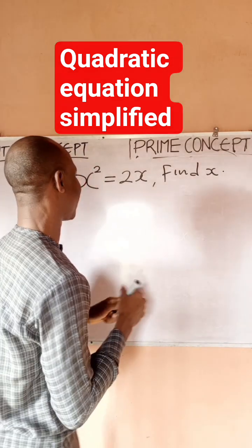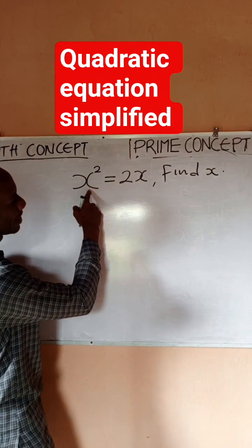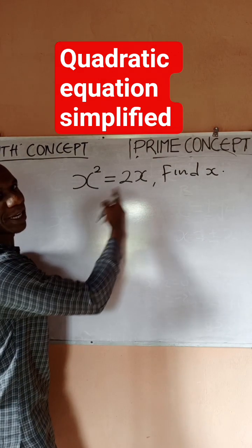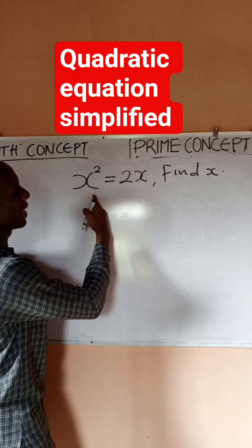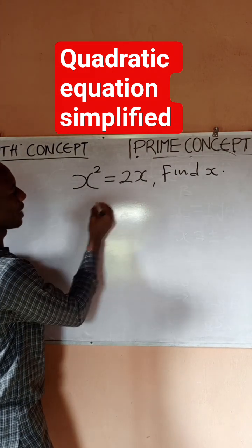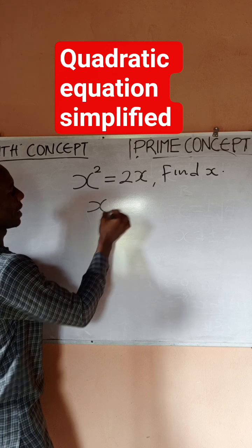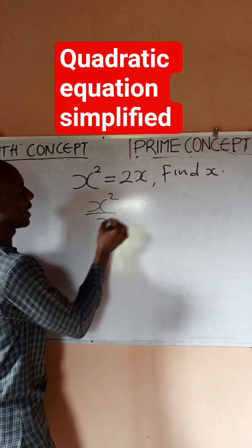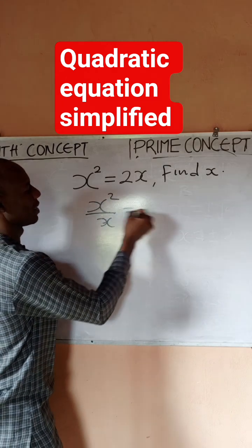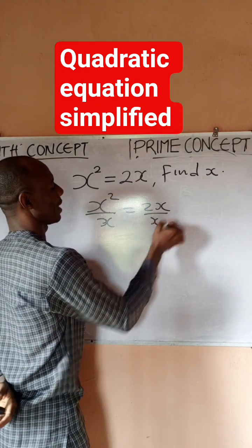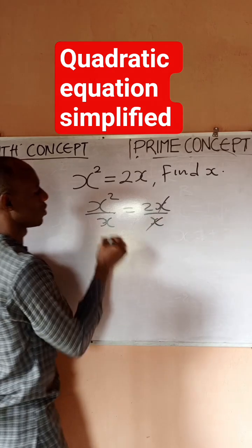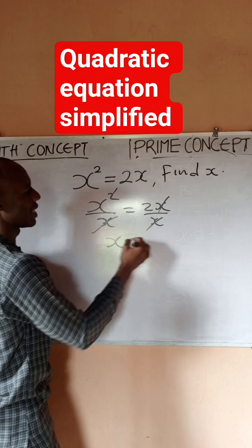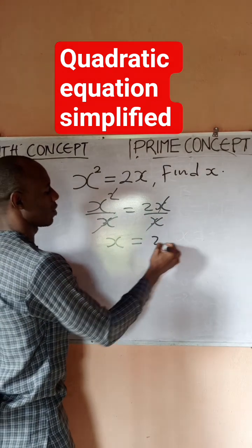Some students may say: since x squared is on this side, divide both sides by x. If you divide both sides by x, you have x squared divided by x equals 2x divided by x, so that reduces and you say that x is equal to 2.